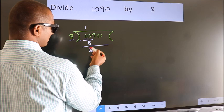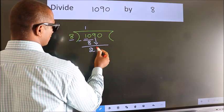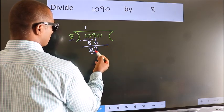After this, bring down the number beside it. So 9 down, making 29.